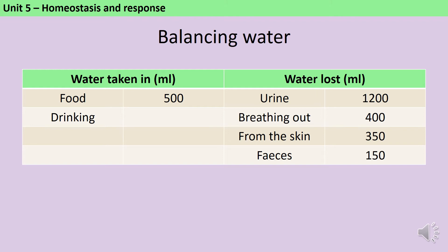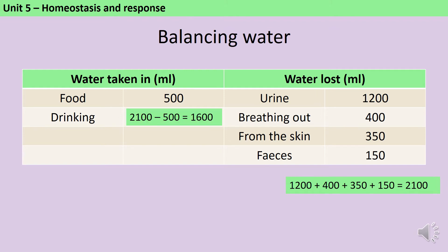First, add up all the water that's been lost — in this instance that's 2,100 ml. For water to be balanced they need to have taken in the same amount. They've taken in 500 ml from food, and the rest has come from drinking. So take the 2,100 ml lost and subtract the 500 ml from food, giving an answer of 1,600 ml of liquid drunk during the day.